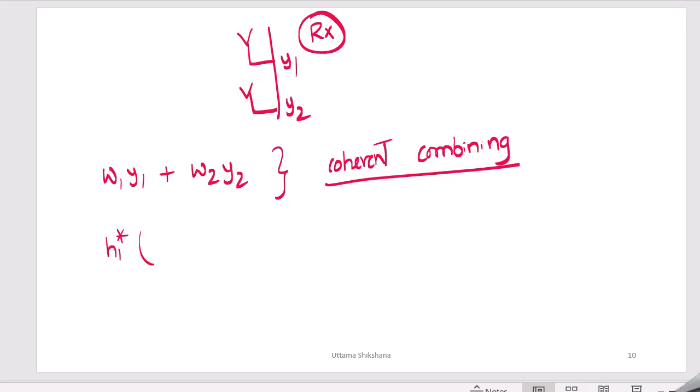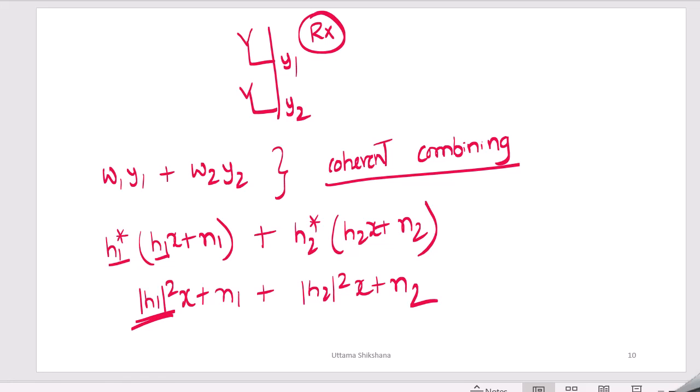Here we are basically eliminating the phase component here also. All the signals will be combined with same phase. So there is definitely a constructive interference. If the coherent combining is not done, then there may be a chance of destructive interference due to out of phase. Since we are combining it coherently, the effect of fading is reduced.